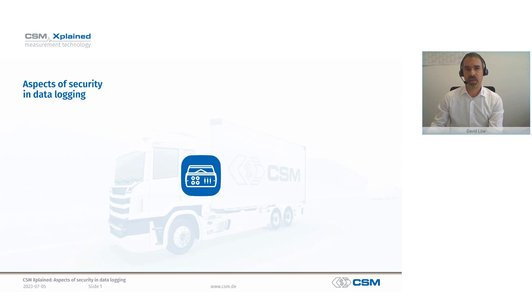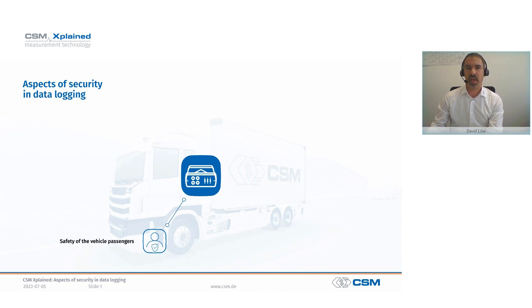Let's get into it. I would first like to give you an overview of important aspects that we will examine in more detail today in the context of security. We start with the first aspect — and this may surprise you — but it is first about the safety of the passengers of the vehicle. For our measurement, we are installing an additional device, namely the data logger, in the vehicle and connecting it directly to the vehicle buses. This modification could lead to interactions and negatively affect the safety of the passengers.